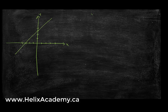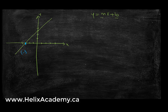Let's do another example with a different line. My goal is again to find m and b. The first step is to find two points on the line. I'll pick the point where x is negative 3 and y is 0, and then another point where x is 0 and y is 3. Let's call this p1 and p2, so x1 is negative 3, y1 is 0, x2 is 0, and y2 is 3.